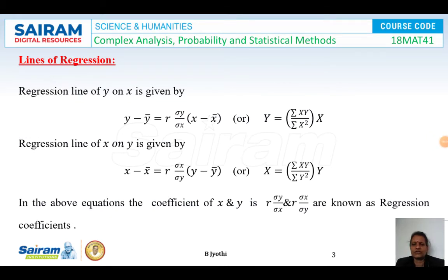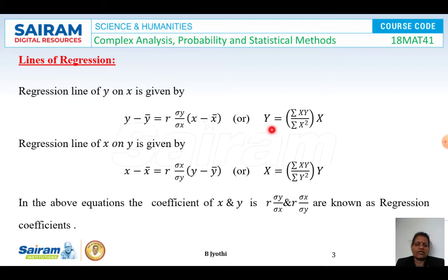There are two types of lines of regression. The first is the regression line of y on x, given by: y minus y-bar equals r times (sigma_y / sigma_x) times (x minus x-bar). Here, (y minus y-bar) can also be written as capital Y and (x minus x-bar) as capital X. This is also given by Y equals (summation of X times Y) divided by (summation of X squared) times capital X.